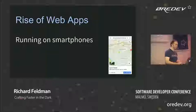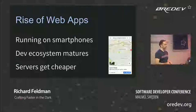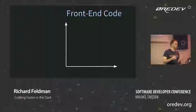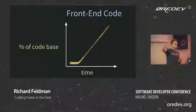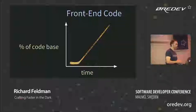Running on smartphones that didn't even exist back in the early days, the development ecosystem has really matured. Servers have gotten a lot cheaper. This has changed the nature of what front-end code looks like, especially as a percentage of the code base over time — it's just absolutely taken off. The amount of front-end code we write today relative to how much we did when everything was on the server has just skyrocketed.